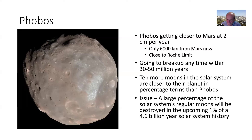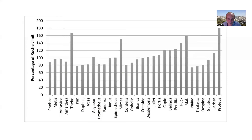A large percentage of the solar system's regular moons are going to be destroyed in the next upcoming 1% of a 4.6-billion-year solar system history — which is a little bit of an issue for an old solar system model. This graph shows some of those moons: Phobos on the far left at 88% of the Roche limit, and moons Pan, Daphnis, Atlas, and others at even lower percentages or similarly close.